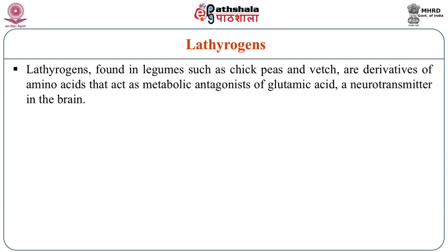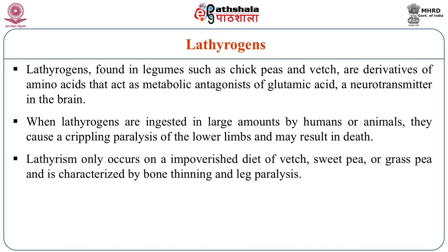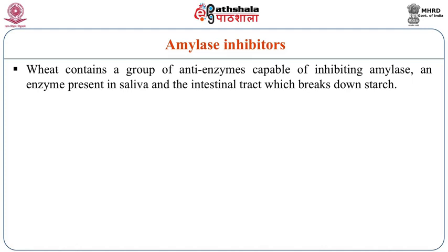Lathyrogens are found in legumes such as chickpeas, and are derivatives of amino acids that act as metabolic antagonists of glutamic acid, a neurotransmitter in the brain. When lathyrogens are ingested in large amounts by humans or animals, they cause a crippling paralysis of the lower limb and may lead to death. Lathyrism occurs only on an impoverished diet fed with lathyrogenic substances like kesari dal and sweet pea.